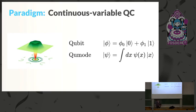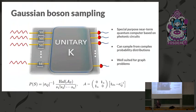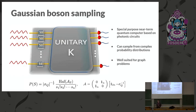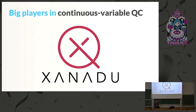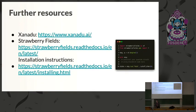The last paradigm is continuous variable quantum computing. Instead of two basis states, you have a continuum of basis states, and the computational building block is called the q-mode. One application is quantum boson sampling, which you can use to sample from complex probability distributions. It's well-suited for graph problems — for example, we wrote a paper on using Gaussian boson sampling for molecule docking problems, specifically finding maximum cliques in certain graphs. You can see that combining knowledge from quantum computing with computer science achieves useful results. The biggest player in this field is Xanadu, and we actually have a speaker from Xanadu here today.